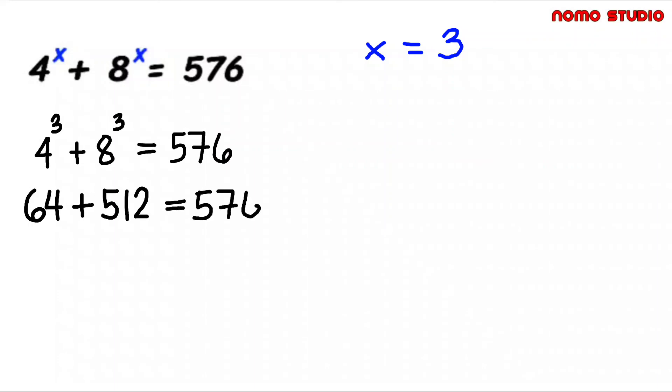So let's check our answer. If x is equal to 3, we have 4 cube plus 8 cube equal to 576. So this is 64, then plus 512. 64 plus 512, and that is equal to 576. So our answer is correct.